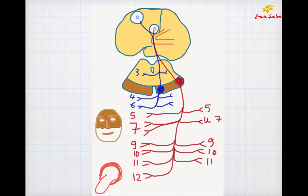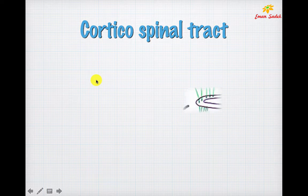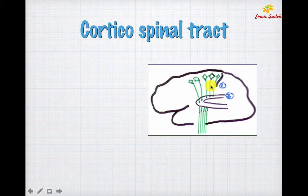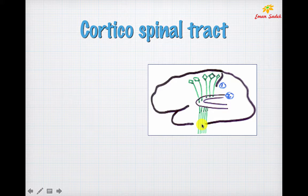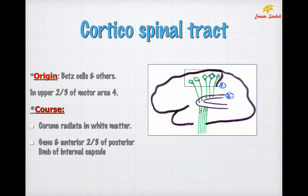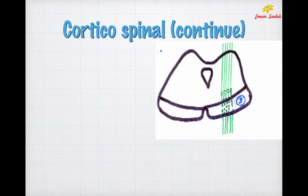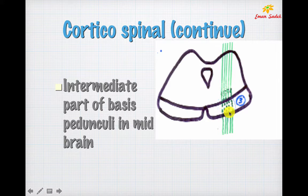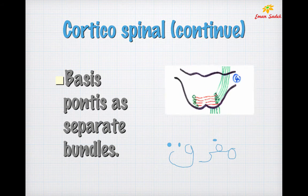The corticospinal tract arises from the upper two-thirds of motor area 4 to supply the muscles of the body. It passes through the corona radiata, then through the genu and anterior two-thirds of the posterior limb of the internal capsule. It then descends through the intermediate part of the basis pedunculi (crus cerebri), where the medial part is occupied by medial corticobulbar and the lateral part by lateral corticobulbar. In the pons, it is divided into bundles by the transverse pontine fibers.